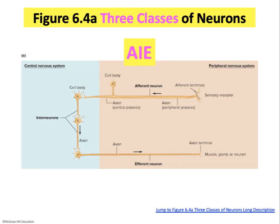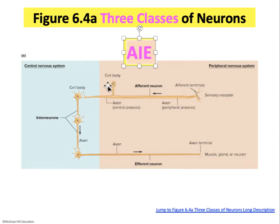There are three classes of neurons throughout the nervous system, summarized by the abbreviation AIE. A stands for afferent neurons, carrying information towards the central nervous system. I stands for interneurons. E stands for efferent neurons, which carry information away from the central nervous system. The cell bodies of afferent neurons are very close to the CNS, whereas the cell bodies of efferent neurons are within the CNS. Interneurons' cell bodies are also part of the central nervous system.